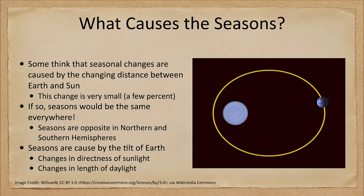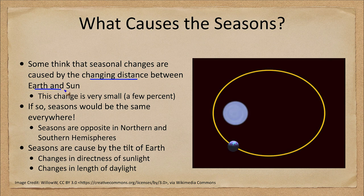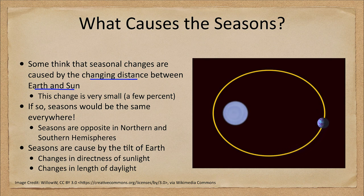Some think that the seasonal changes are caused by the changing distance between Earth and Sun, and you can consider that this makes logical sense. If you are close to the Sun, it should be warmer. Because if you're closer to the Sun, you would expect it to be warmer, and if you are farther from the Sun, you would expect it to be colder.